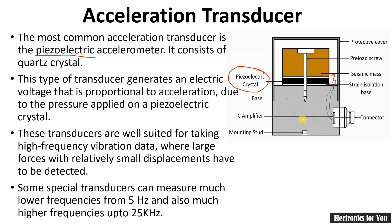Some special transducers can measure lower frequencies from 5 hertz and also much higher frequencies up to 25 kilohertz. Note that acceleration transducers with a piezoelectric crystal have a very high frequency range, from 5 hertz to 25 kilohertz.